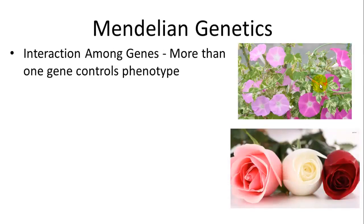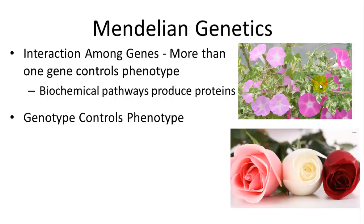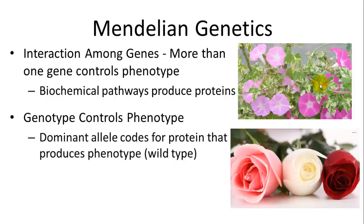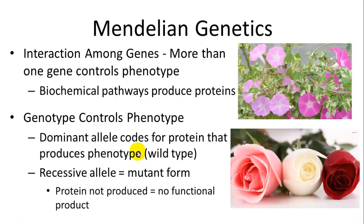Many traits are controlled by more than one gene. They involve an interaction of a host of genes because of biochemical pathways involving multiple genes and multiple proteins to reach their functional product. The genotype controls the phenotype — the dominant allele codes for the protein that produces the phenotype, while the recessive is a mutant form where the copying of the gene into protein is disrupted and doesn't follow the biochemical pathway.